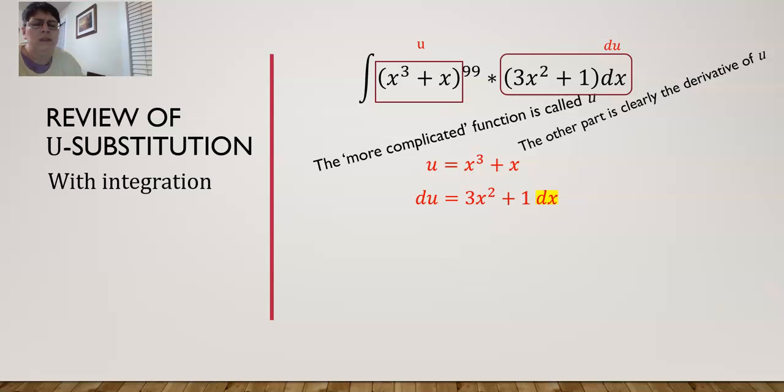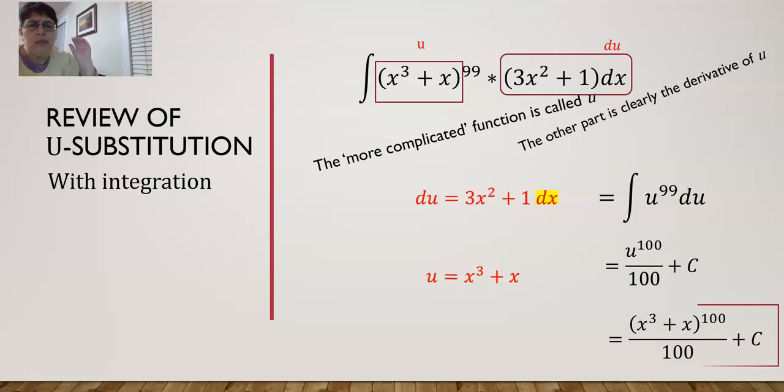So substituting this in we get u^99 du. And you're not done because you have to substitute what u is back into the function. So that was u-substitution with integration.